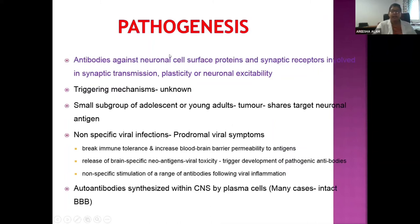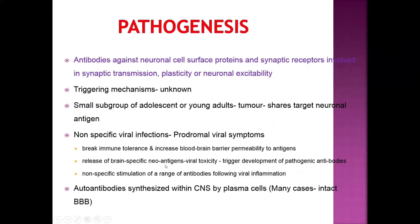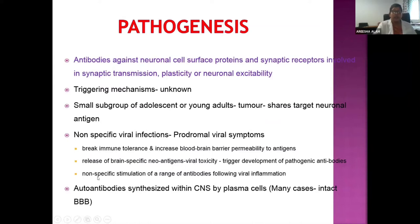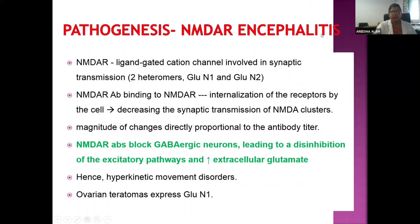Regarding pathogenesis: autoantibodies act against neuronal cell surface proteins and synaptic receptors involved in synaptic transmission, plasticity, or neuronal excitability. The trigger mechanisms are unknown, but in adolescents with tumors, molecular mimicry between tumor and neuronal antigens leads to antibodies attacking neural tissue. In non-specific viral infections — the most common cause in children — there is loss of immune tolerance, increased blood-brain barrier permeability, release of brain-specific neoantigens, and subsequent pathogenic antibody formation. In some cases, autoantibodies may be synthesized within the CNS by plasma cells.